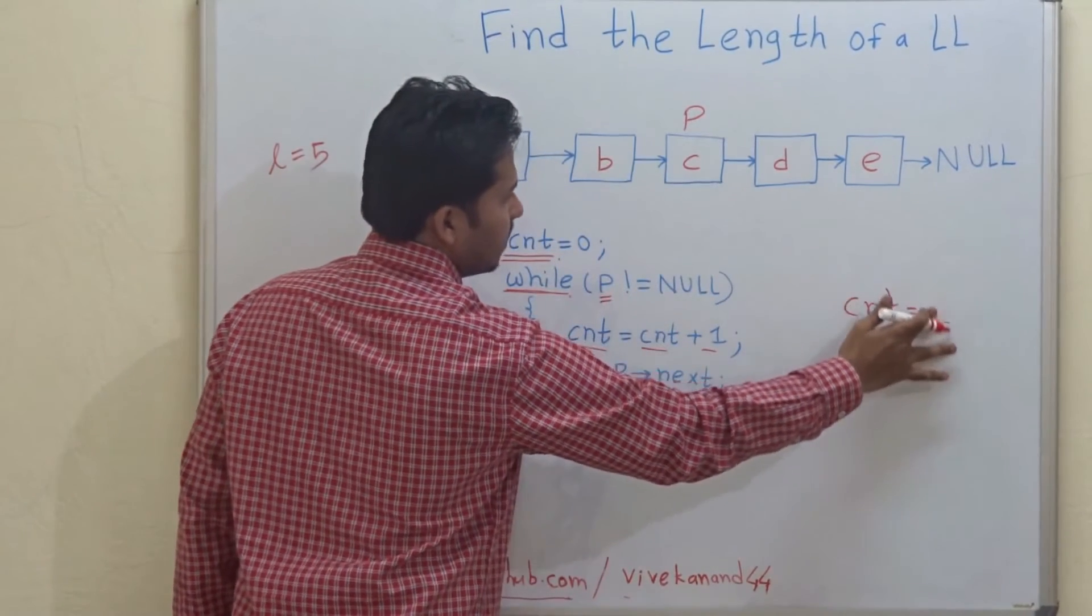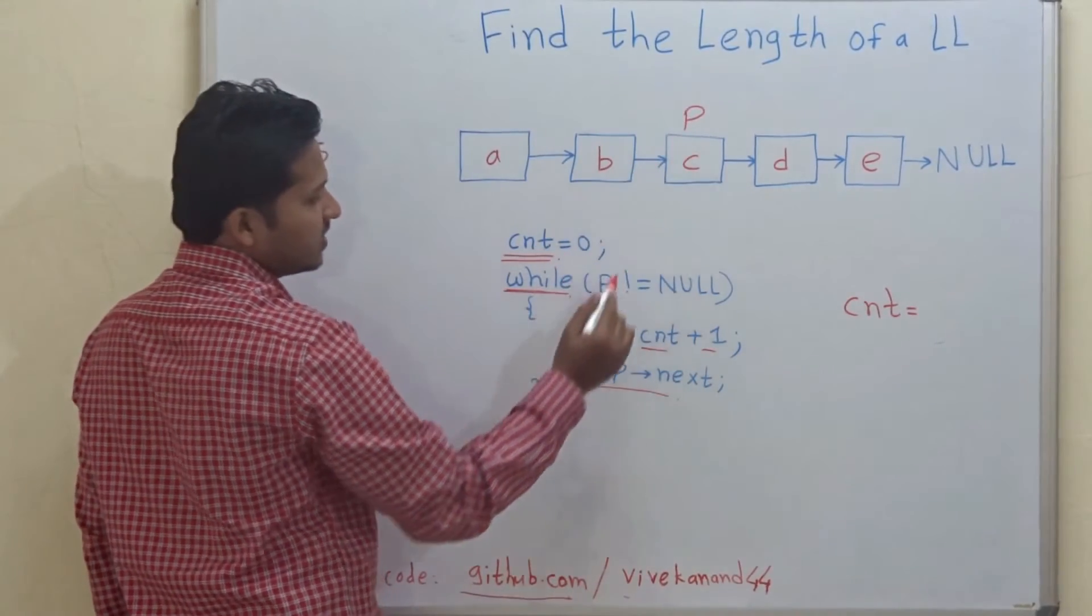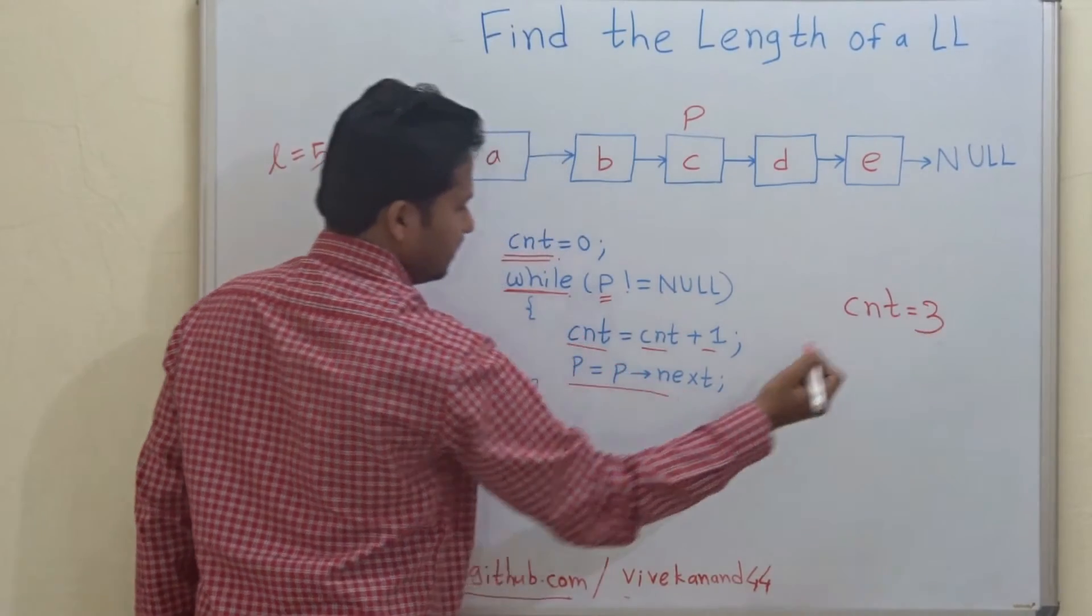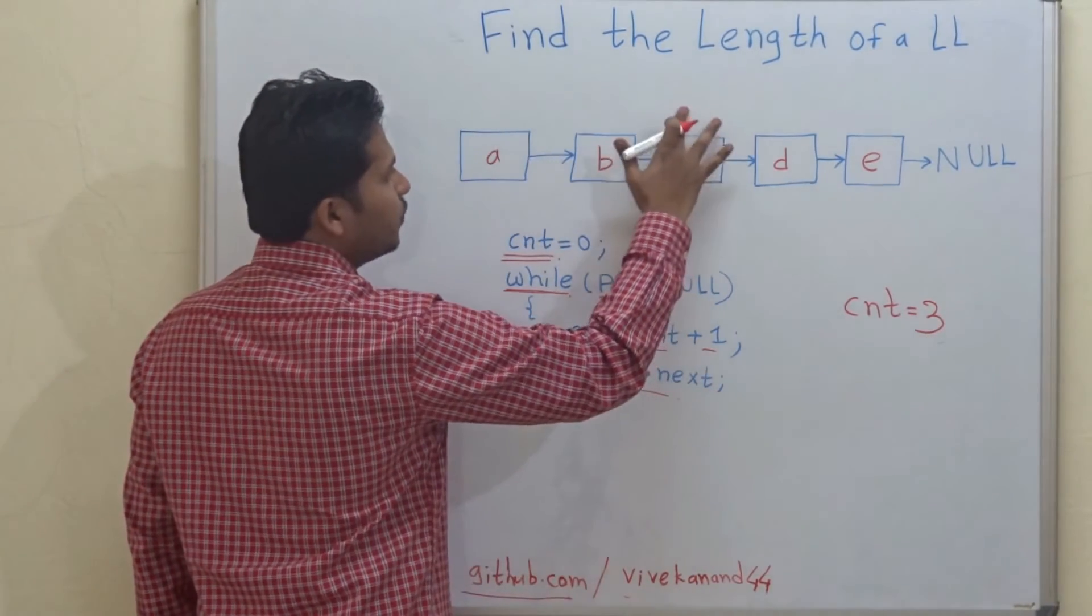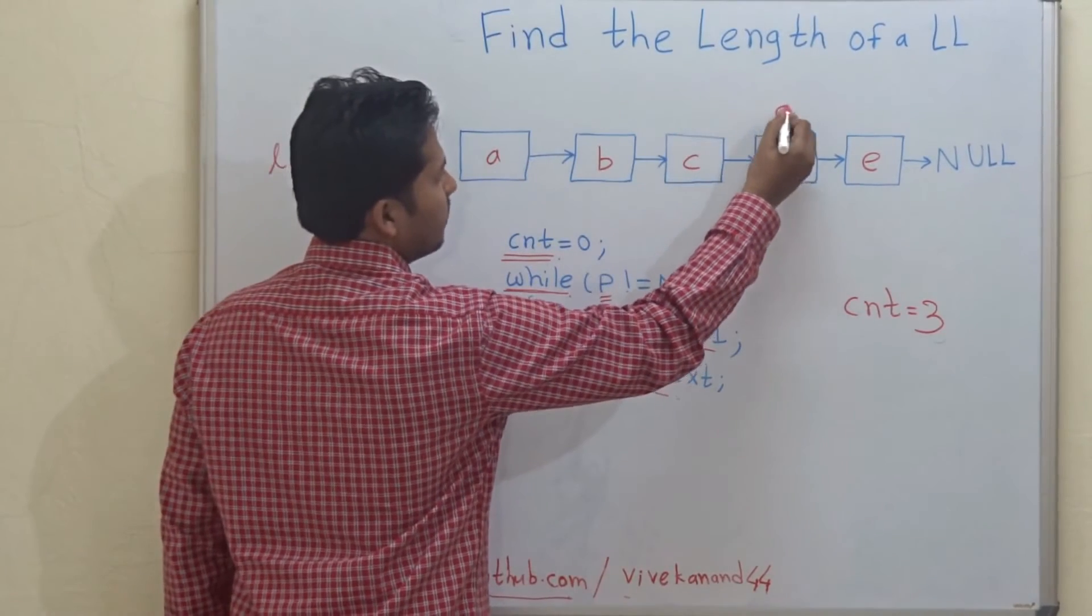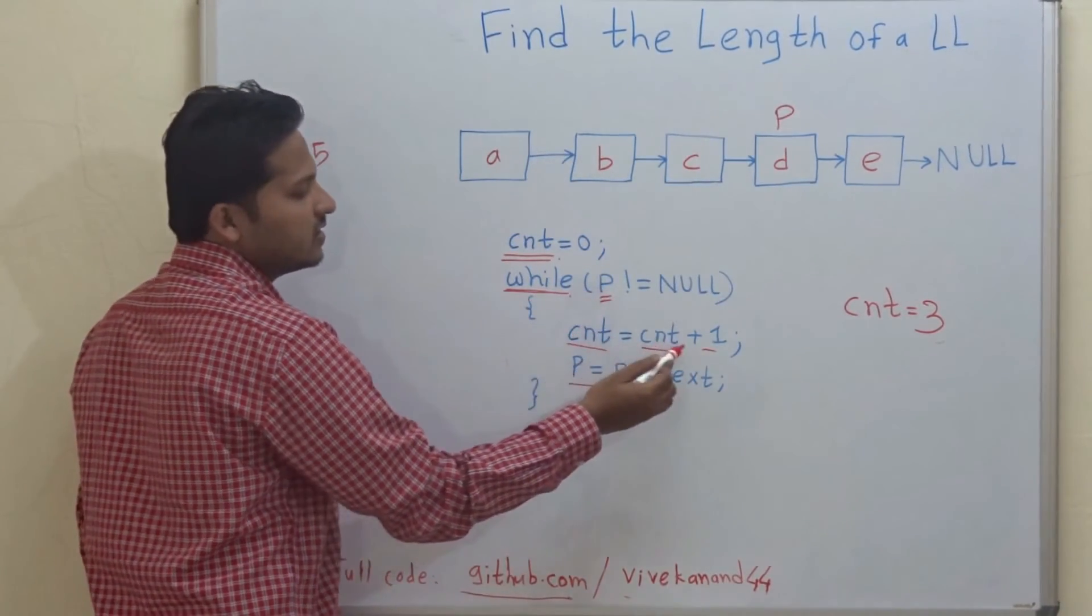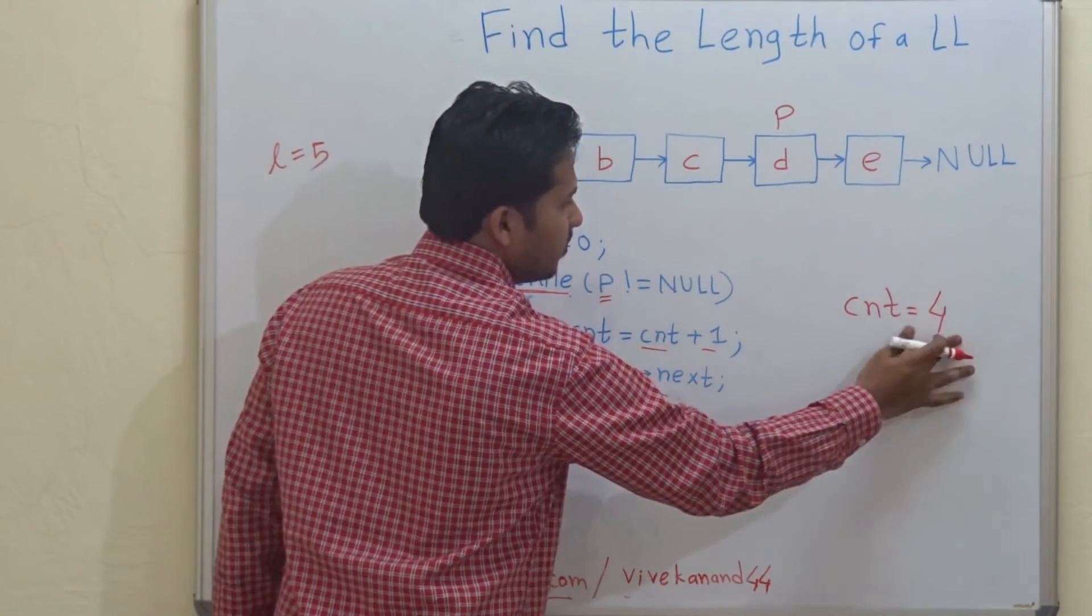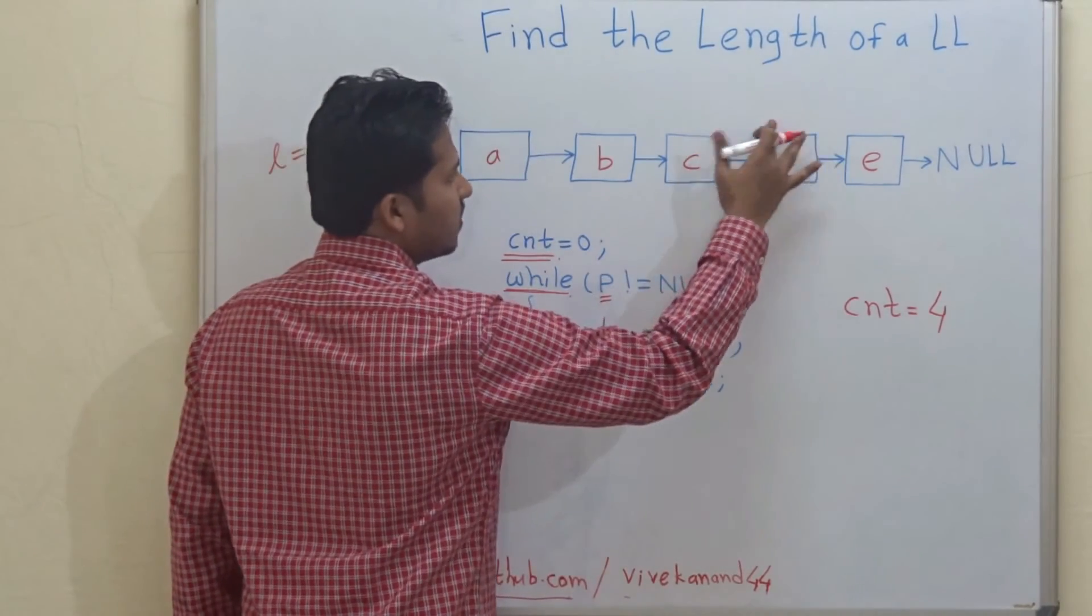Now here, again when we go to the next node, counter will be incremented by one. It will become three, and p equals p.next. We move to the next node. Now p is not equal to null, cnt equals cnt plus one. It will become four, and p equals p.next. We will go to the next node.